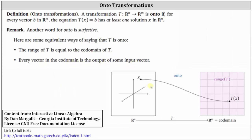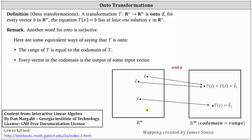Let's take a look at a second onto mapping. This mapping does represent an onto transformation. Notice every output vector — in this case, vectors b_1 and b_2 — do have at least one corresponding input vector. Vector b_2 has one corresponding input vector, vector y. And output vector b_1 has two corresponding input vectors, vectors x and z.